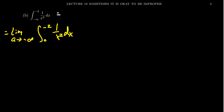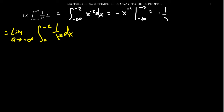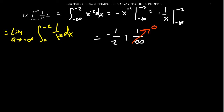Integrating from negative infinity to negative 2 of 1 over x squared, we write x to the negative 2 power to make it easier. The antiderivative is negative x to the negative 1, or negative 1 over x, evaluated from negative infinity to negative 2. Plugging in: negative 1 over negative 2, plus 1 over negative infinity. Since dividing by infinity gives 0, we're left with 1 half. So the result is 1 half.